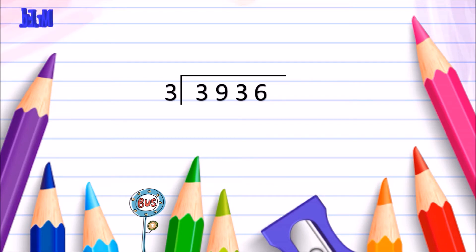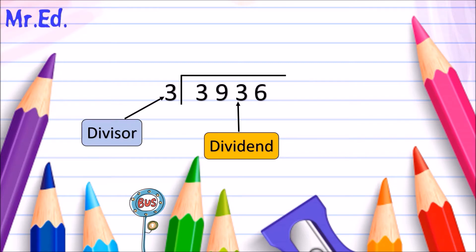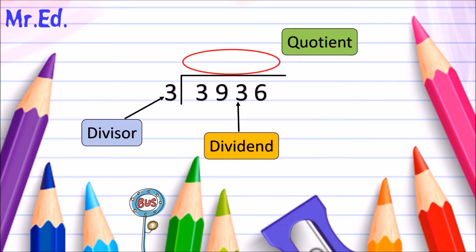The large number — in this case 3,936 — is known as the dividend, and this is the amount we are going to divide. The smaller number on the outside is known as the divisor, and this is the number that we're going to divide into our dividend. If we look above the line, we can see that this is the quotient. The quotient is going to be the answer of how many times the divisor divides into the dividend.